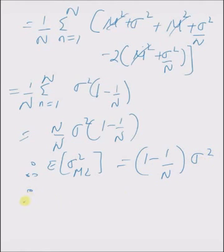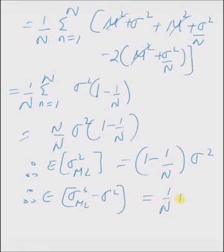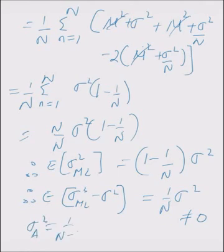Therefore, the bias is E[σ²_ml] minus σ², which equals −(1/n)·σ², which is not equal to 0. Hence, the maximum likelihood estimate of variance is a biased estimate. Thanks for watching.